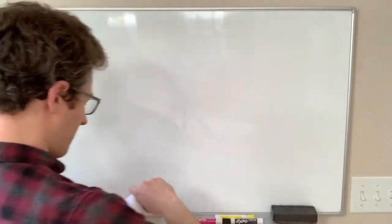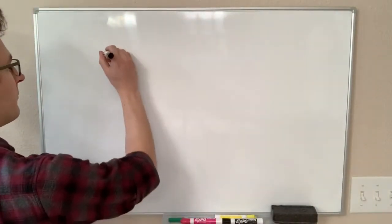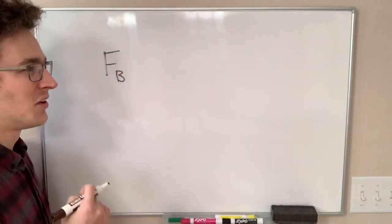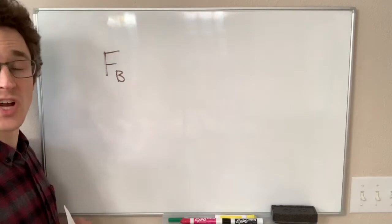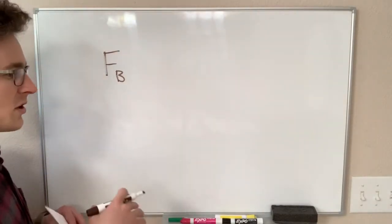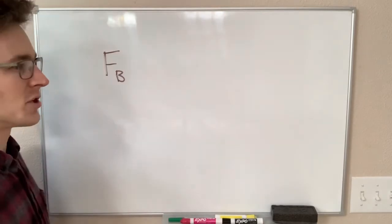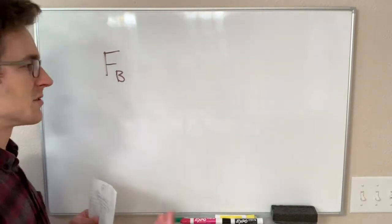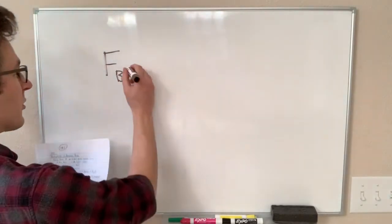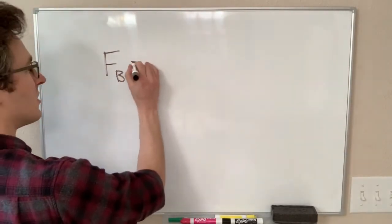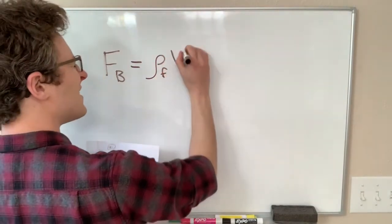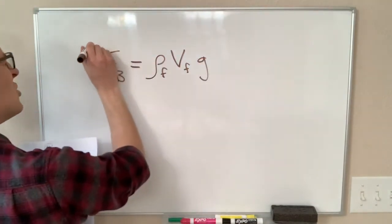The equation for the buoyant force is the following. Deriving this for an object with a simple geometry like a cylinder is pretty straightforward — the book does this. Doing it for an arbitrarily shaped object involves a little bit of calculus, but it isn't too bad either. We're not going to worry about either of these; we're just going to use the result. So the buoyant force is equal to rho times V times g.